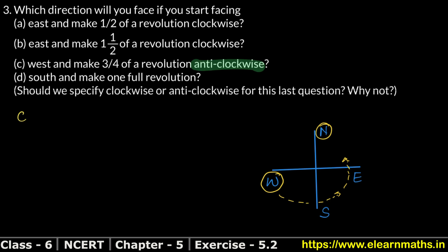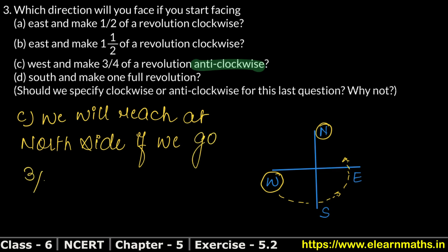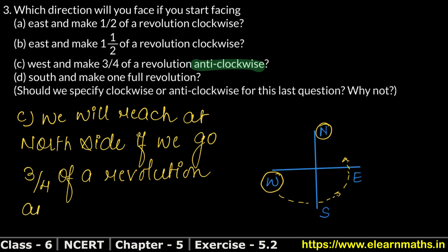Part C answer: we will reach the north side after going three-fourths of a revolution anti-clockwise. Now let's do the next part. Part D says: start facing south and make one full revolution.